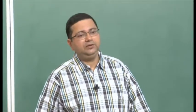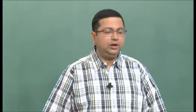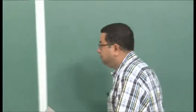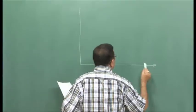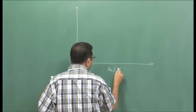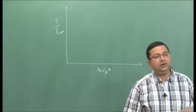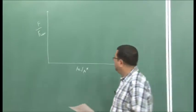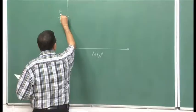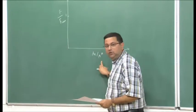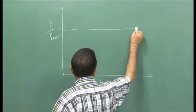In the last class we discussed nozzle flow and compared the performance of a converging-diverging nozzle with a converging nozzle. We showed that the advantage of the diverging portion is essentially restricted up to the optimum design. We drew a diagram showing the area ratio — exit area divided by throat area — and the thrust ratio, which is the actual thrust for a converging-diverging nozzle non-dimensionalized by the thrust produced by a converging nozzle alone. For a converging nozzle, the exit area equals the throat area, so this ratio is 1 — that is the baseline.